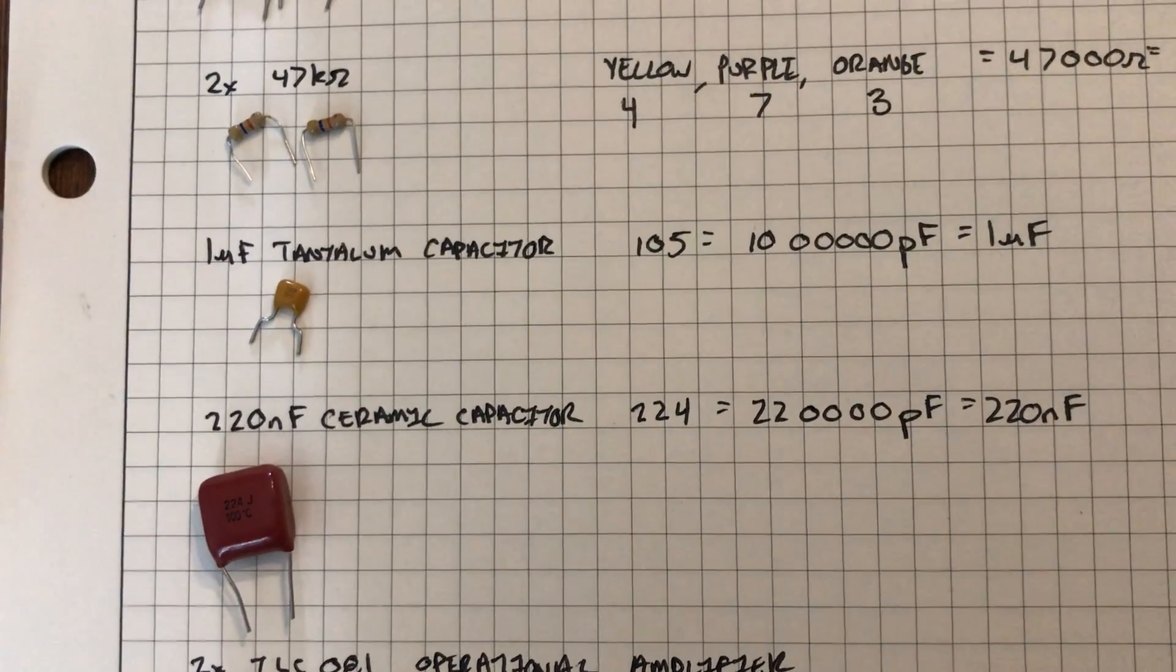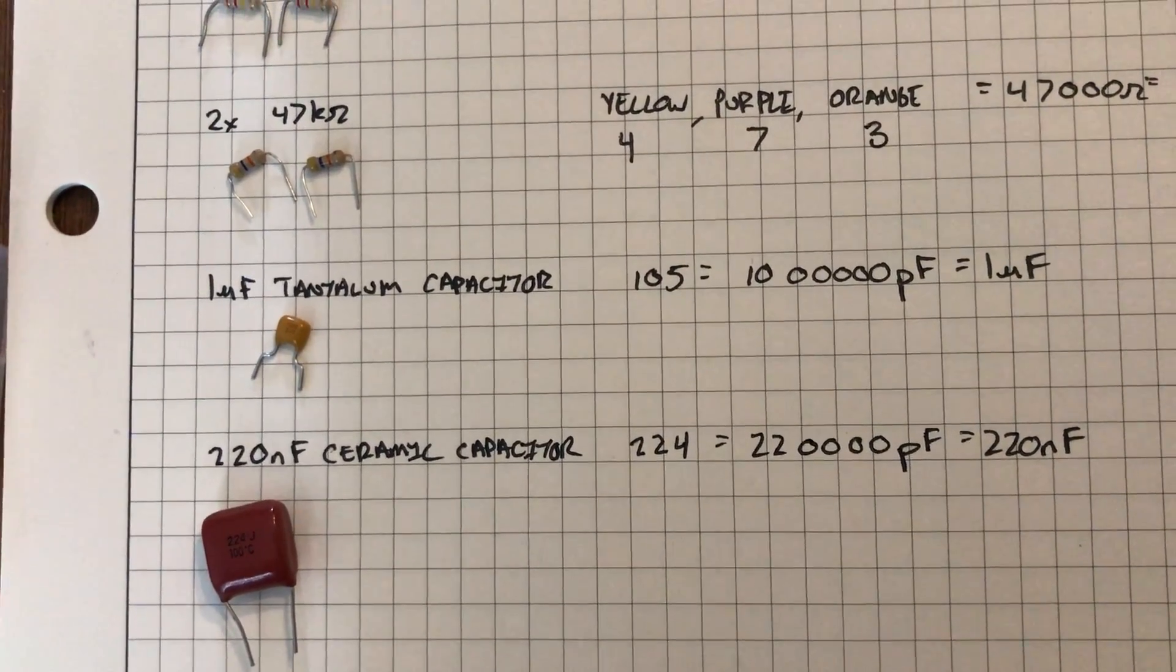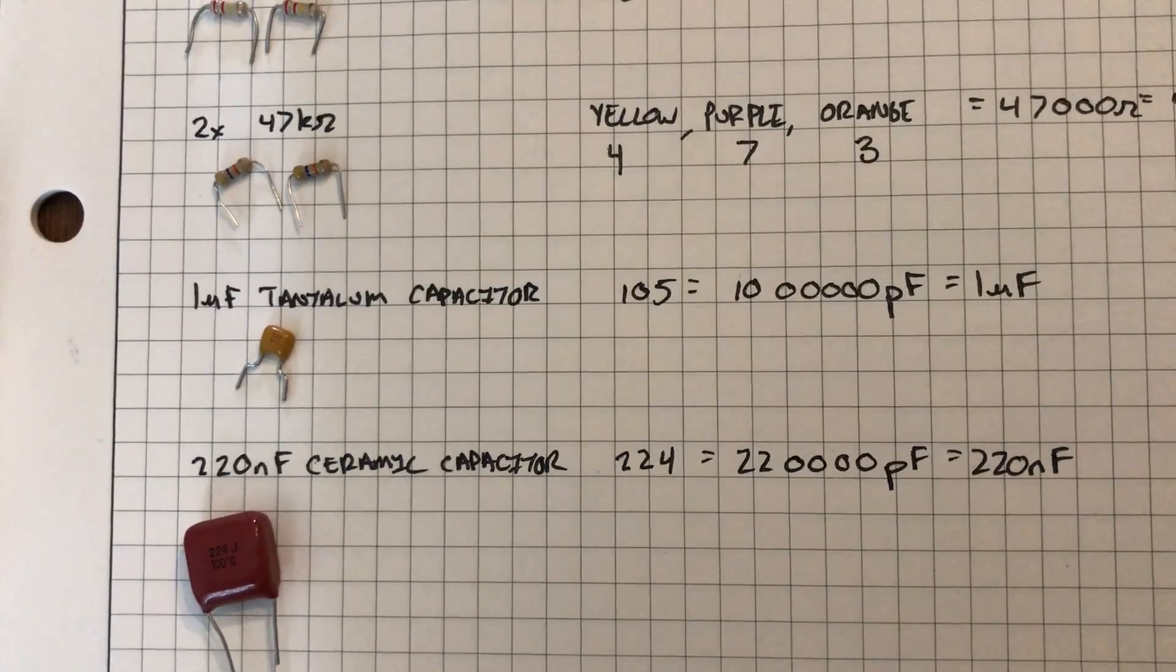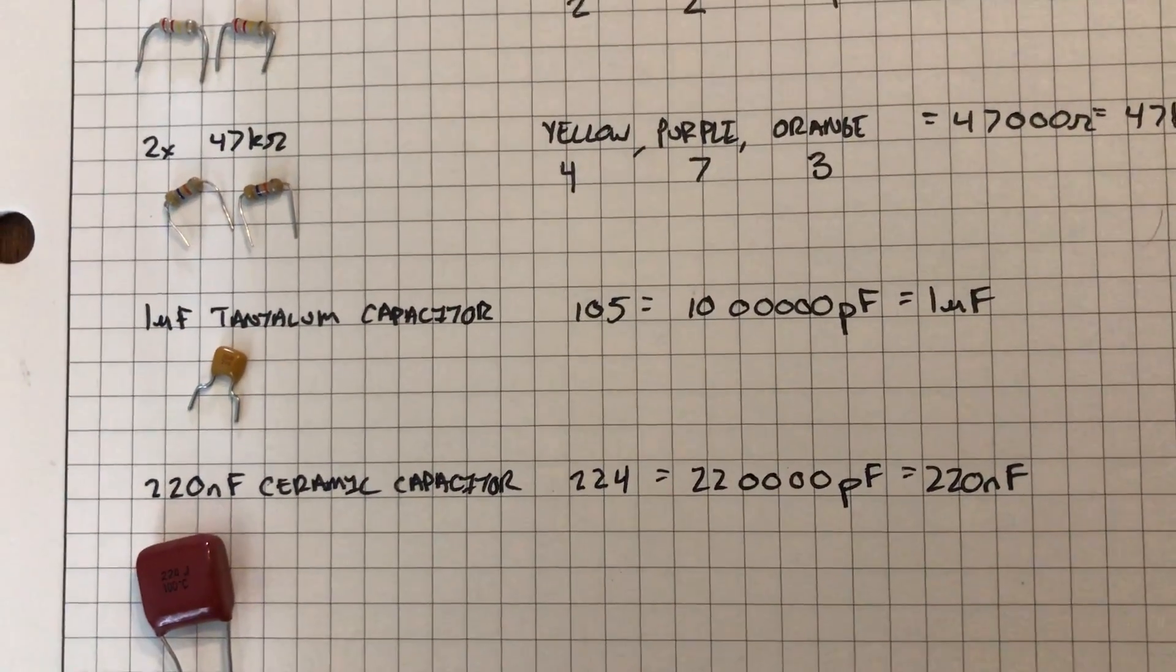That'd be a really large physical capacitor, and we really don't want to use electrolytic capacitors in analog circuits if at all possible because of the polarization issue. So I've got a tantalum here.